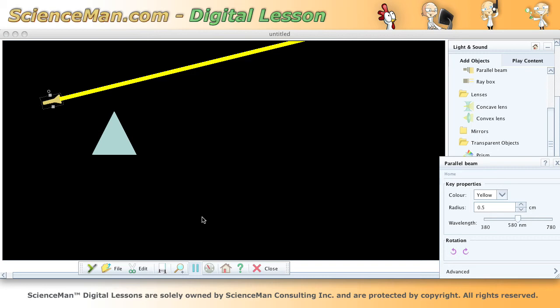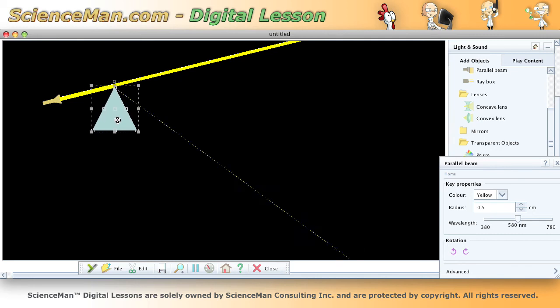So as you can see on my screen here, I've got a beam of light and I've got a prism, and I'm just going to take my prism and put it in front of the beam and see what happens.